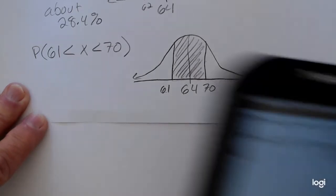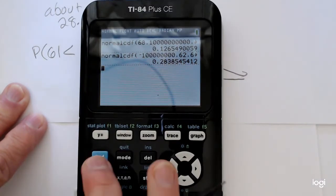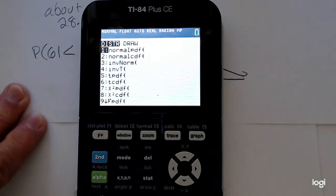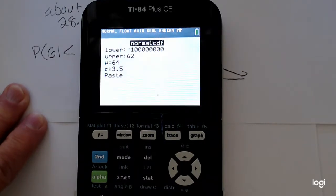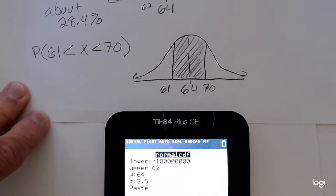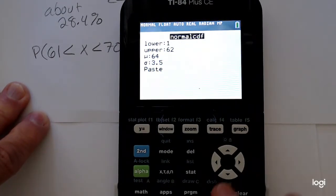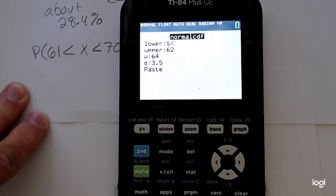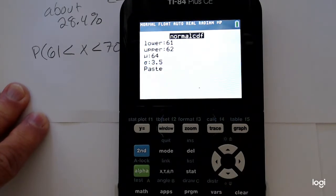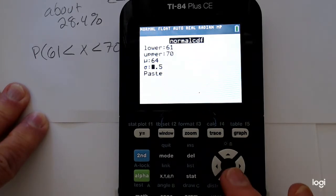So I'm going to go back to the normal CDF function, back to my distribution menu. Now my lower bound is 61 and my upper bound is 70. So changing those. And it kept mu and sigma from the last part.